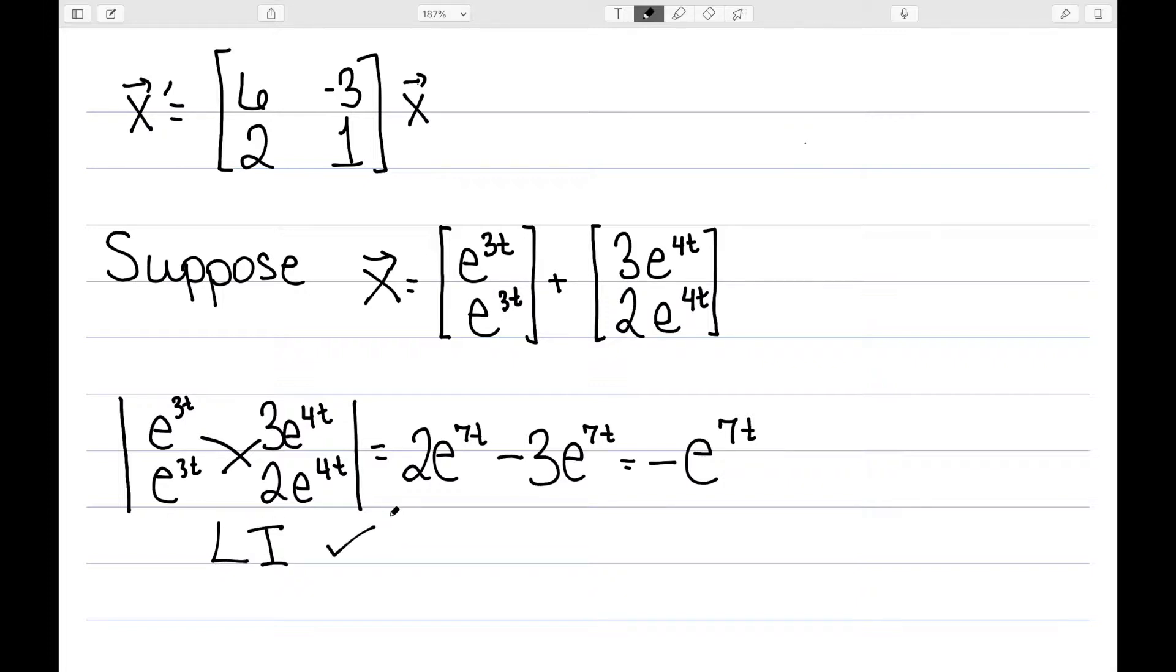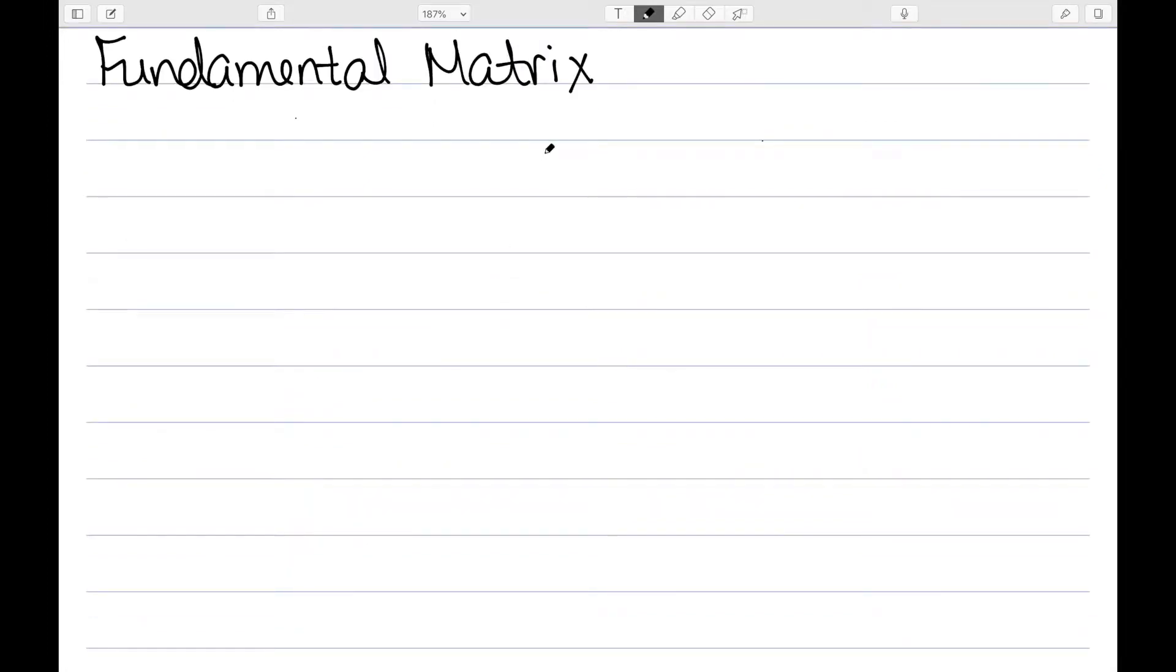So we do have our first condition done. And with this, I want to define the idea of the fundamental matrix. The first thing I need for a fundamental matrix, I need x1 and x2 to be linearly independent. And the second condition is I need the Wronskian to be not equal to zero for all values of t. In order to be linearly independent, I just need some value of t where it's not zero. And for the fundamental matrix, I need it to be true for all of the values.